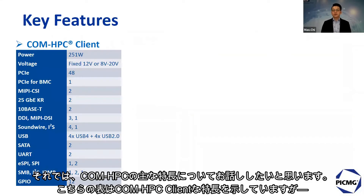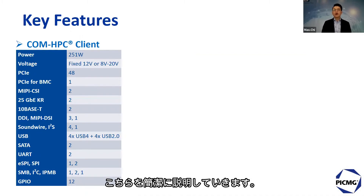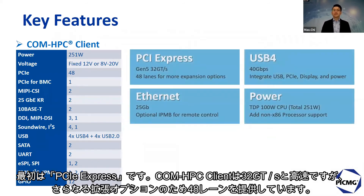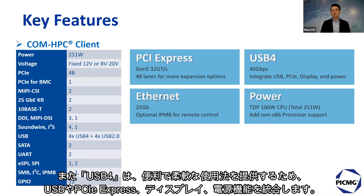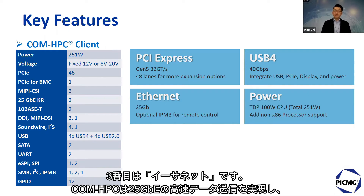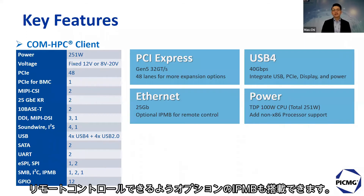Because all the mounting hole positions are the same, the thermal design can be unified and leveraged. Now let's move to the key features. The table here shows you the key features of ComHPC client. First, PCI Express: ComHPC client supports PCI Express Gen 5 with 32 GT per second high speed, and it gives you 48 lanes for more expansion options. For USB 4.0, it integrates USB, PCI Express, display, and power all together to provide flexible designability. Ethernet: ComHPC supports 25 Gigabit Ethernet for high-speed data transmission, and also leaves optional IPMB support for remote control.